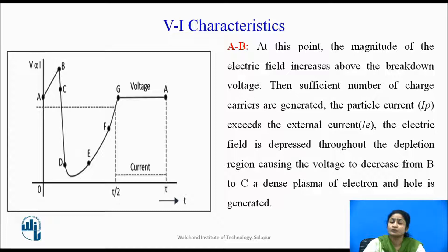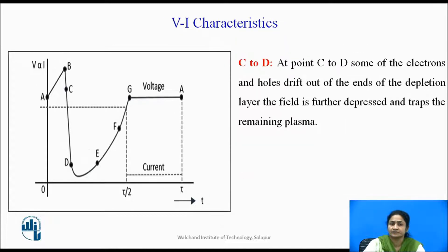This is due to the particle current Ip exceeding the external current. So there are a number of charge carriers forming. And this electric field is dispersed through the depletion region causing the voltage to decrease from B to C point. This is a region where dense plasma formation takes place, that is, the dense plasma formation is due to the electrons and holes generation.